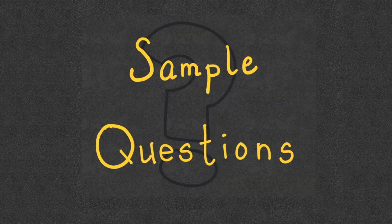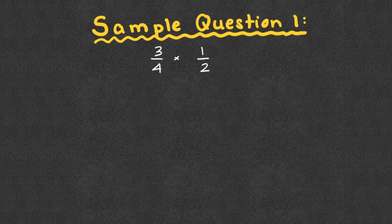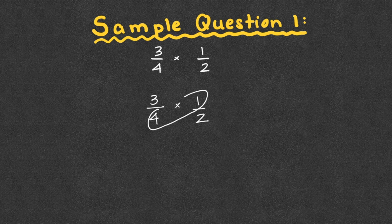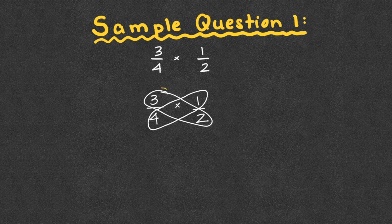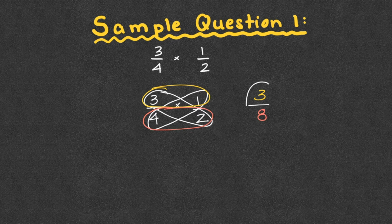We have our sample questions — you can do these with me, on your own, or any mix in between. Sample question one: three-fourths times one-half. I'll rewrite the problem and look to see if I can cross-simplify. Four and one have no common factor but one. Three and two have no common factor but one. So I multiply across: three times one is three, four times two is eight. My answer is three-eighths. If you cannot cross-simplify, your answer should already be in simplest form.